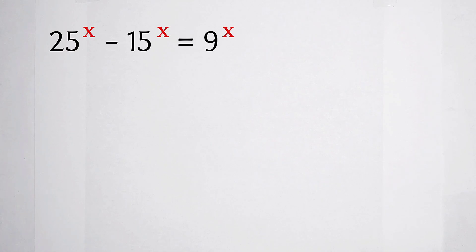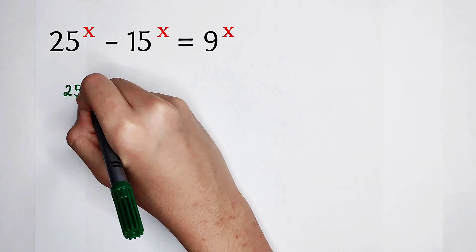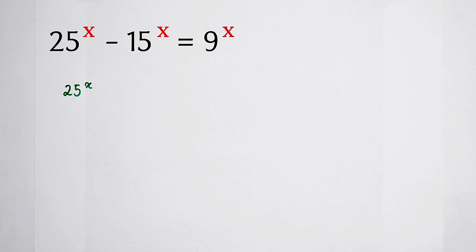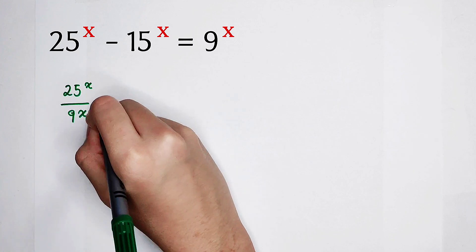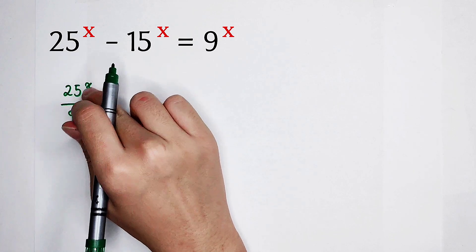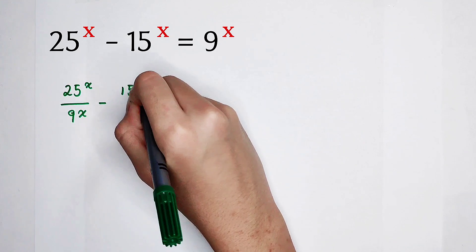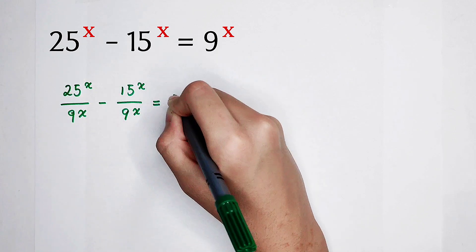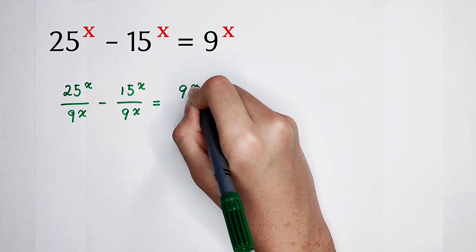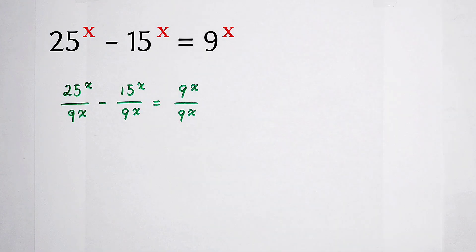Since this, we have to divide by 9 to the power of x on both sides. So now we have 25 to the power of x divided by 9 to the power of x, minus 15 to the power of x divided by 9 to the power of x, is equal to 9 to the power of x divided by 9 to the power of x.